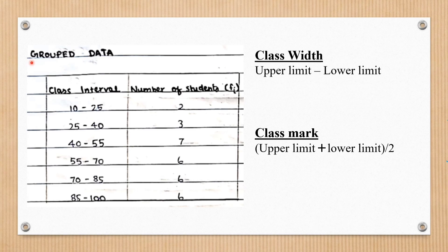Now we are going to find the mean for grouped data. Grouped data can be continuous and not continuous. Here we are going to consider an example for continuous data. In the given table there are two columns: the first column is the class interval, and the second column is the number of students. The number of students is the frequency, represented by fi.